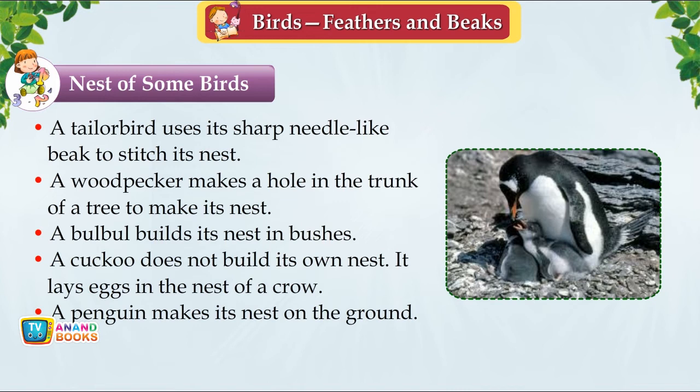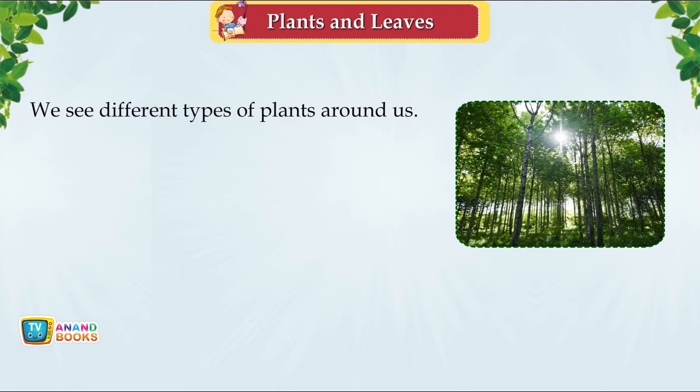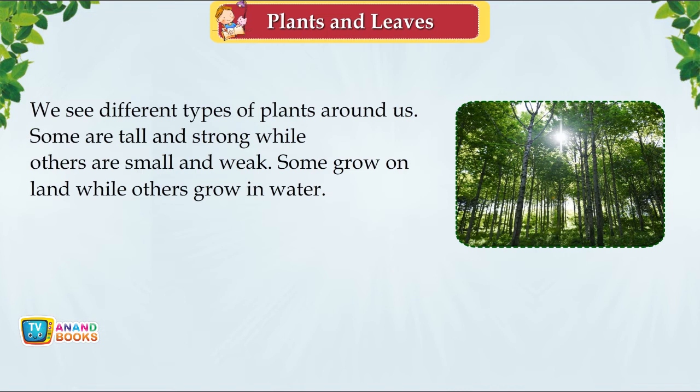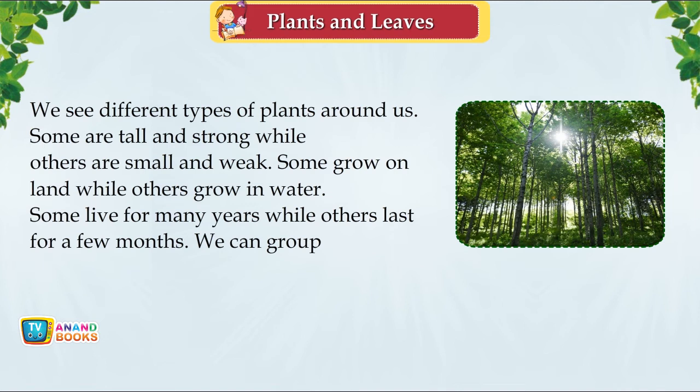Chapter 10: Plants and Leaves. We see different types of plants around us — some tall and strong, others small and weak; some grow on land, others in water; some live for many years, others only a few months. We can group plants on the basis of three features: size, the place where they grow, and how long they live.